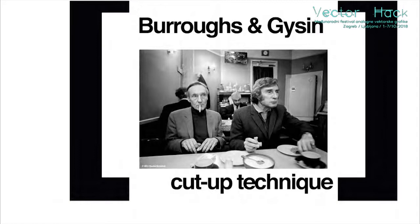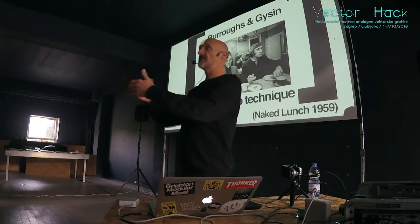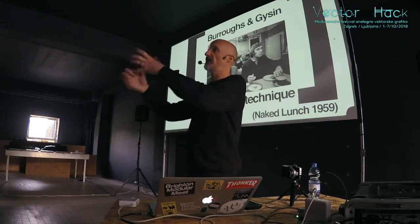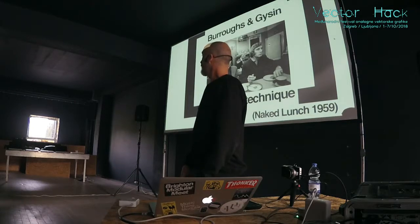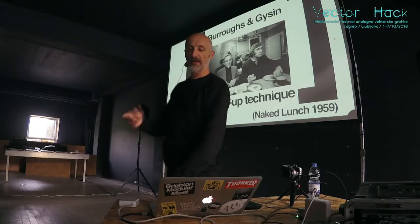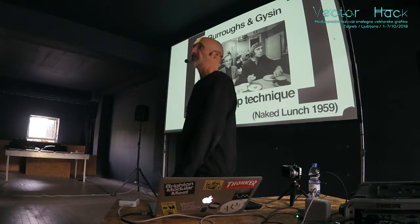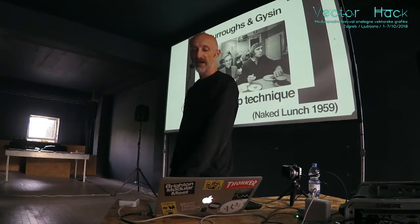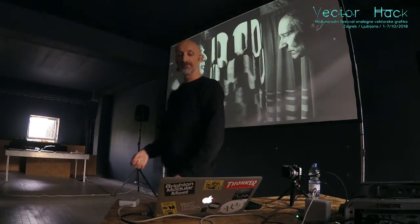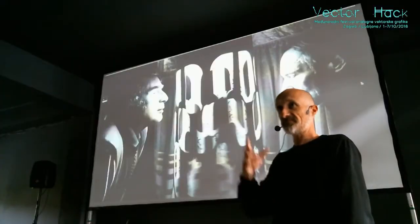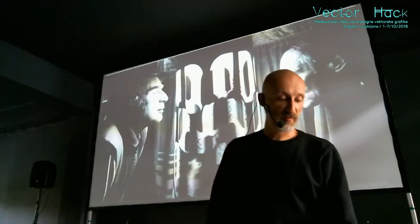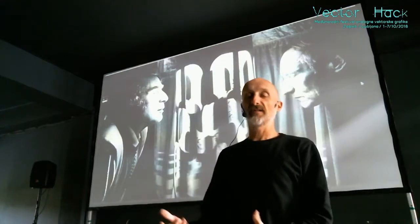William Burroughs and Brian Gysin developed the cut-up technique - more Gysin than Burroughs, but Burroughs applied it to the Naked Lunch book in the late fifties. He'd write a lot of stuff out, chop the page up, and reassemble it. It would create a new random narrative, and you could read through it and wonder why things were connected to whatever they were connected to - challenging the way you think. This is the dream machine, which they worked on with Ian Somerville. Has anyone had a go on one? Shut your eyes, the flickering happens, and you might start seeing some shapes. You're allowing your brain just to do stuff without actually looking at anything.